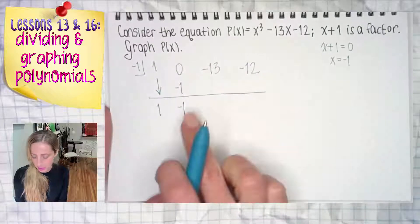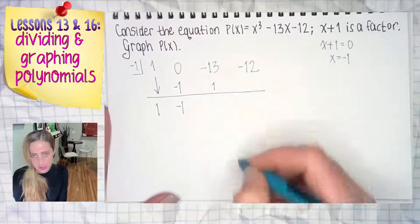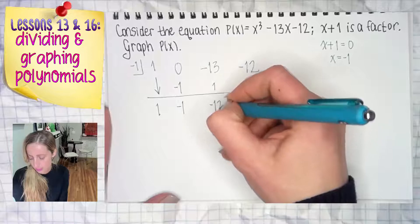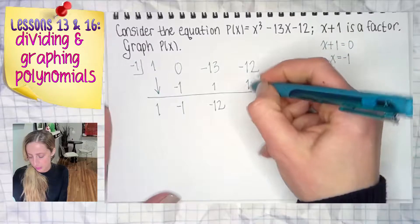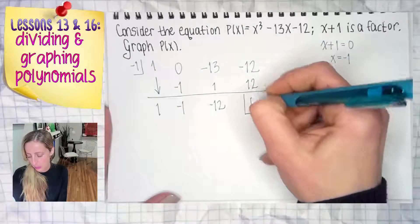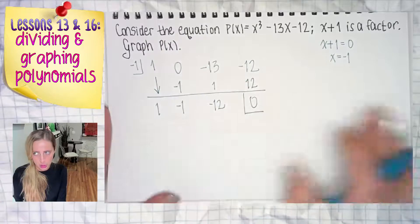New coefficient times the divisor. Add them straight down. Never been wiser. New coefficient times the divisor. Add them straight down. Box that one off. It's the last one. Should be our remainder if we're doing everything correctly.